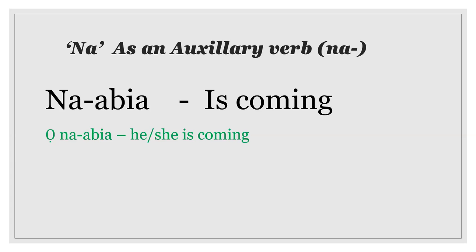Na as an auxiliary verb means 'is coming.' One distinctive feature of knowing that 'na' is functioning as an auxiliary verb is when you see this mark right in between words. That means that 'na' in that particular sentence is functioning as an auxiliary verb.